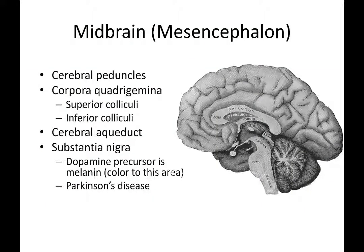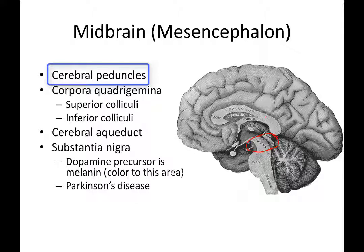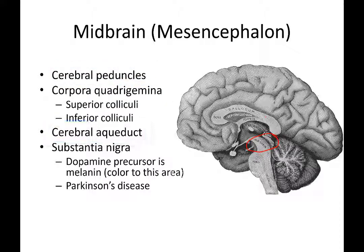The midbrain is the first region we're going to talk about. It's also known as the mesencephalon. The features you need to know from this region are the cerebral peduncles, the corpora quadrigemina, the cerebral aqueduct, and the substantia nigra.